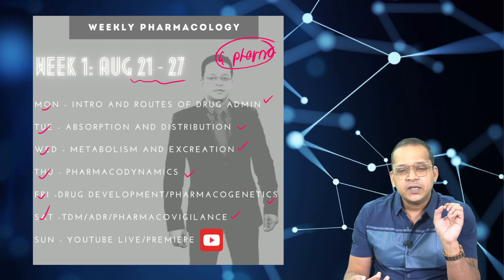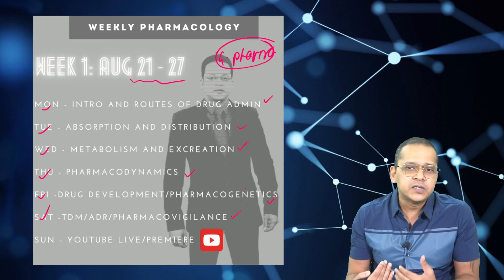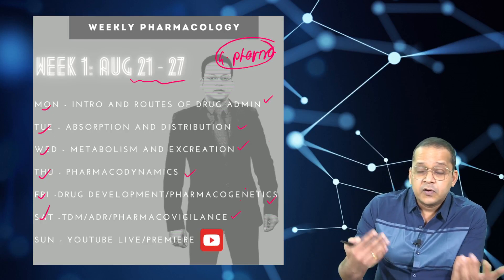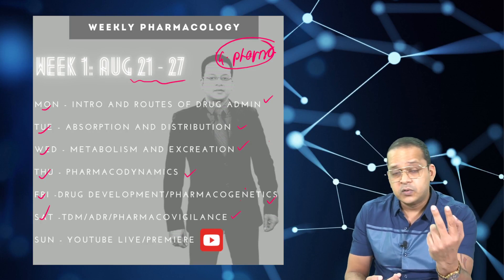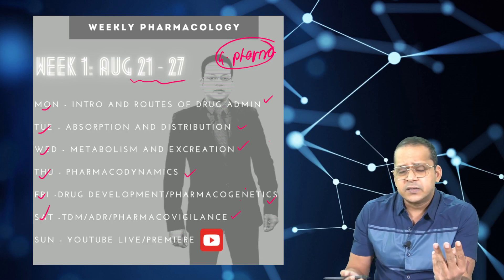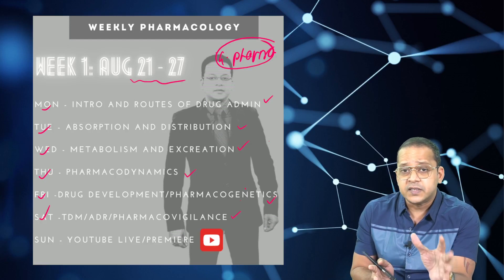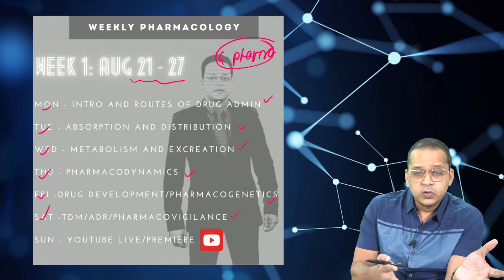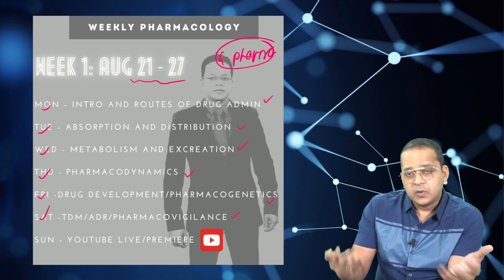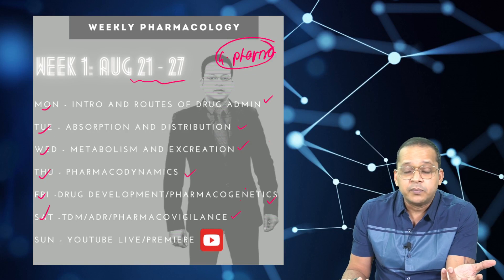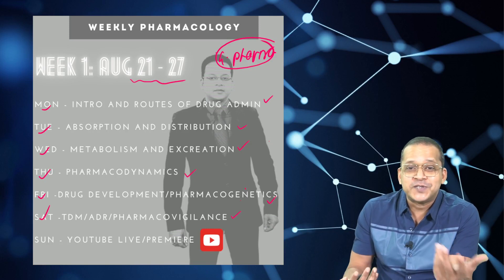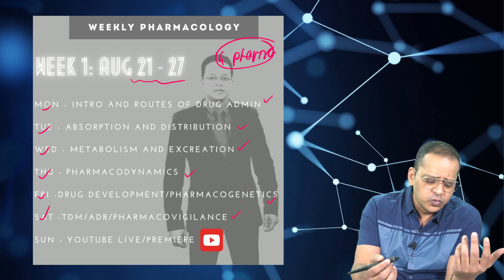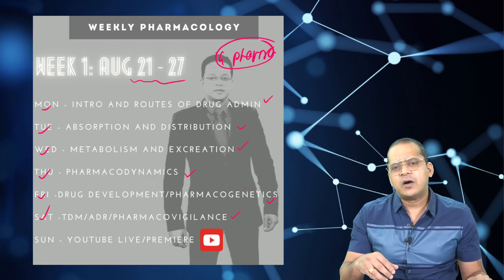Why this plan? I draw inspiration from my own journey. For me, three of the most volatile subjects were pharma, microbiology, and biochemistry. While studying these, I understood I had to reinvent myself, otherwise I wouldn't retain much. So I followed this particular style for all three subjects, and it helped a lot. I'm sure all of you would agree about the challenging nature of these three subjects.